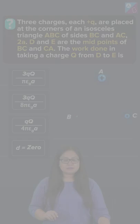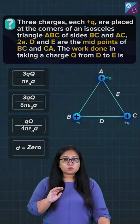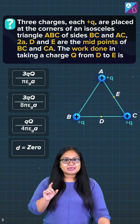The work done in taking a charge Q from point D to point E is equal to the potential difference between the points D and E, which is VE minus VD, multiplied by charge Q.